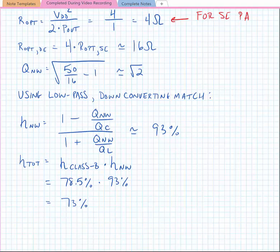This isn't too bad, but let's note that if we had done this with a single-ended amplifier, in other words, we needed a 4 ohm impedance, that the efficiency would have been about 62.5%. So if we had done this with a single-ended amplifier, we would have lost almost 10% right off the bat just due to losses in the matching network.